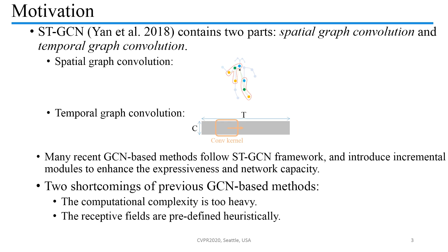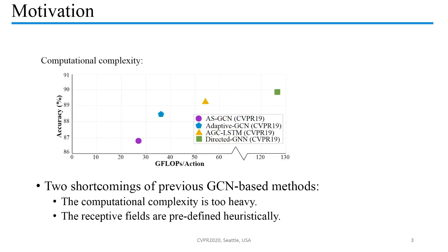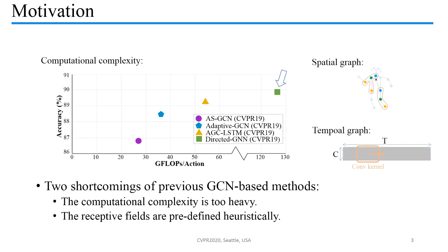Recently, many variants of ST-GCN have been proposed. However, there are two shortcomings of these GCN-based methods. Firstly, the computational cost is too heavy, even reaching about 100 GFLOPs. Secondly, the receptive field of both the Spatial Graph and Temporal Graph are predefined heuristically.